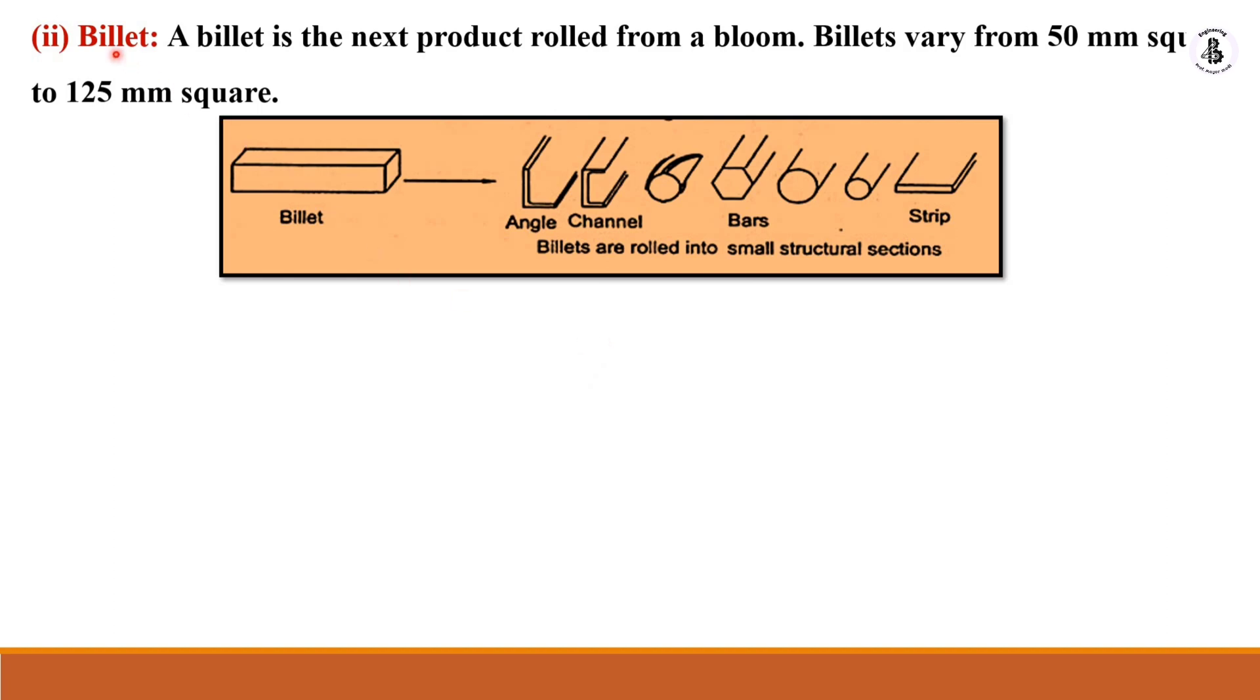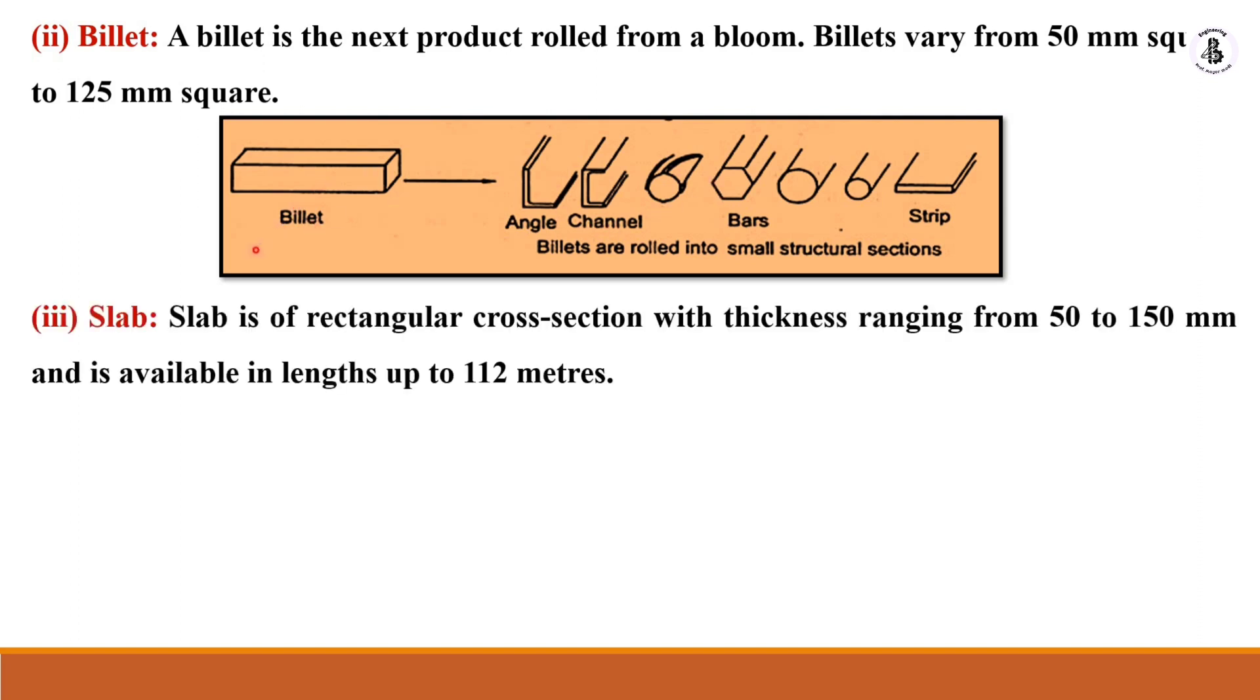Once you made a bloom, you can convert it into billet, and billet into the required shapes and sizes. After this, slab.